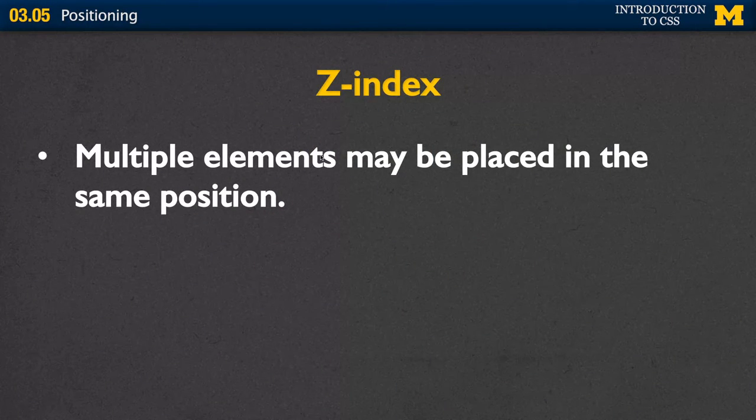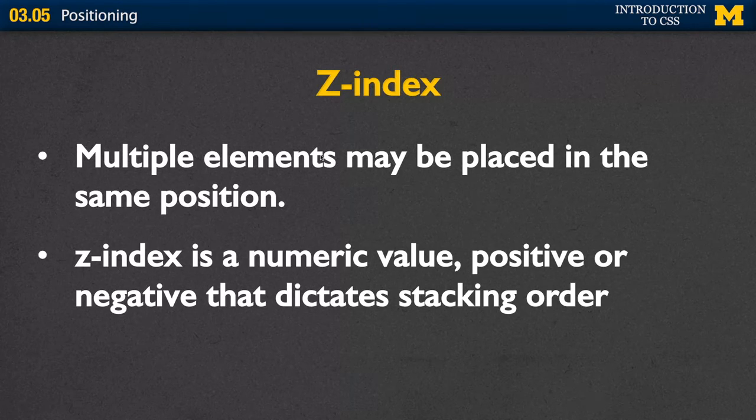One thing I showed you is that it's possible for multiple elements to be placed on top of each other. There's a way to deal with that if you don't like the ordering, and that's called the Z index. The Z index is just a number value — either positive or negative — that tells the browser your stacking order. If you want to make sure something is always on top, you'd put something like 100. If you didn't really care, you could give it a negative 100. This is useful for positioning elements more dynamically when you add JavaScript later on.